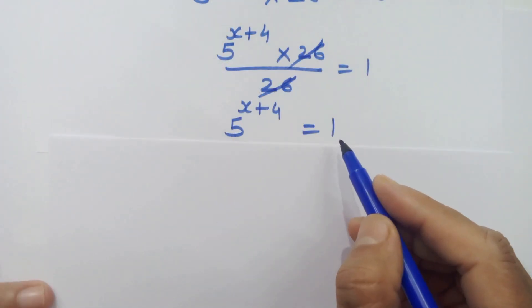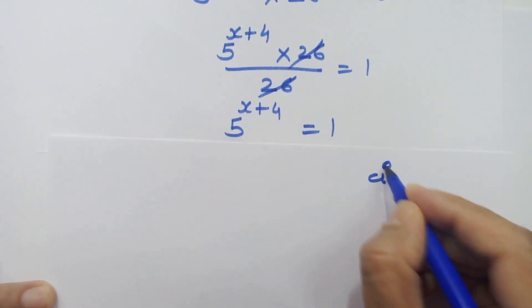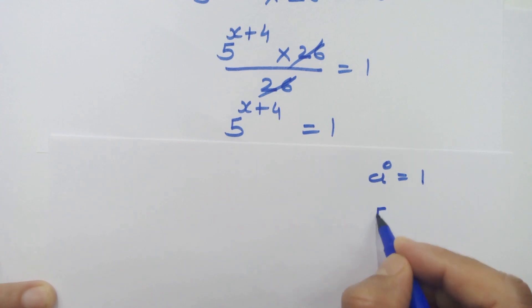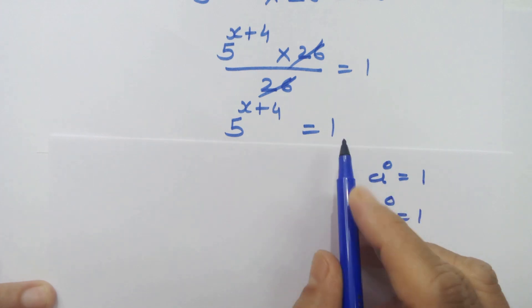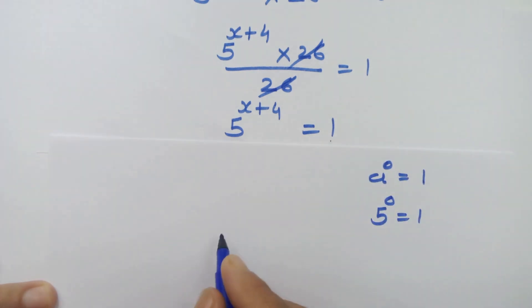Now 1 can be result of any number which has 0 as a power. What I mean to say is a raise to 0 is equal to 1 and 5 raise to 0 is also equal to 1. So we can write 5 raise to 0 instead of 1. So 5 raise to x plus 4 is equal to 5 raise to 0.